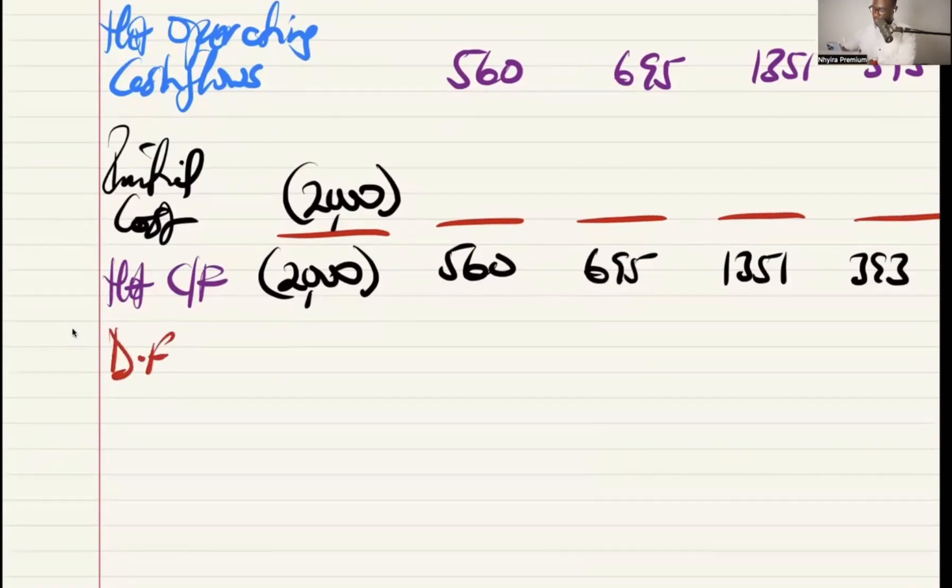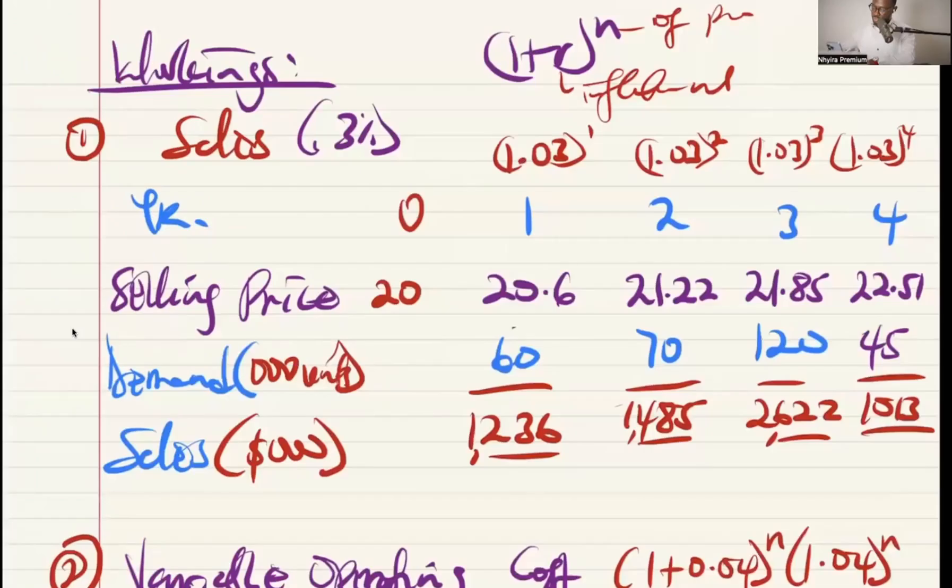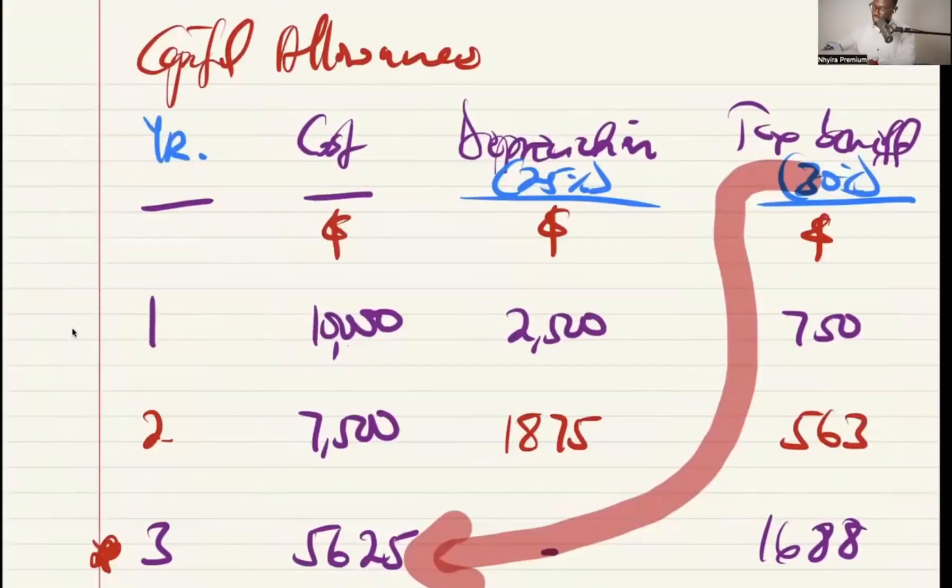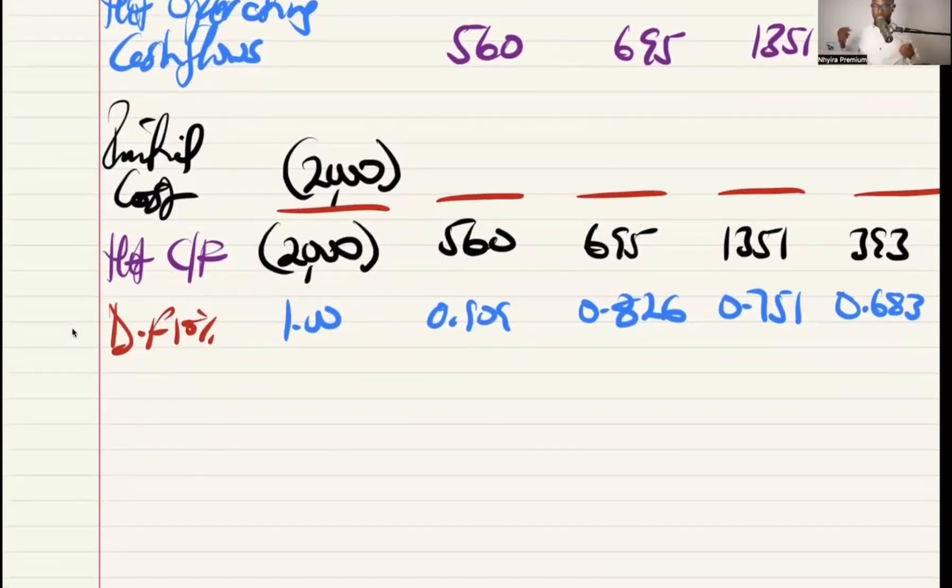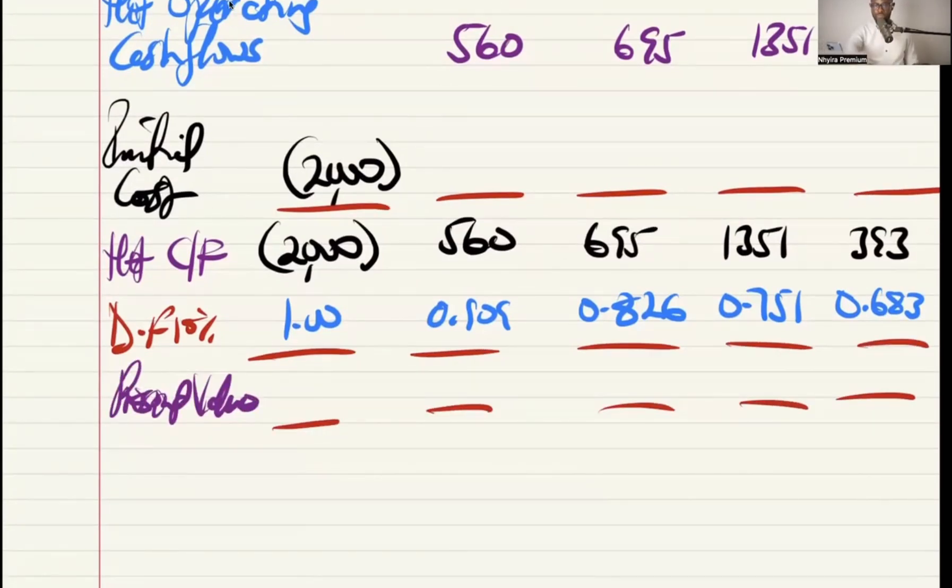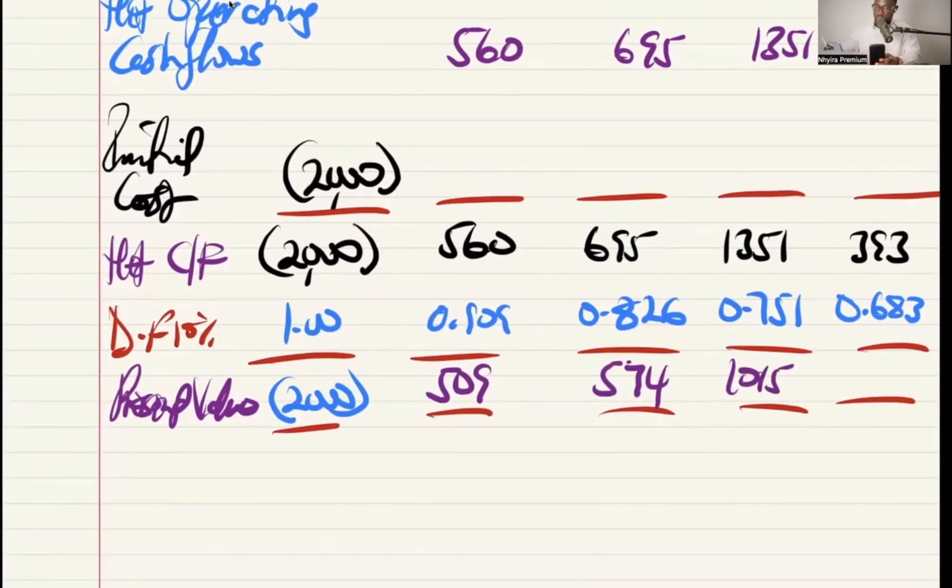They will bring in the discount factor. What is the rate we are given? 10%. So year 0 is 1.00, 0.909, 0.826, 0.751, and 0.683. So we multiply up so we can get our present value here. So present value. Year 0 is 2,000 negative. 509. 574. 1,015. Approximately 268. So that is the idea about that.